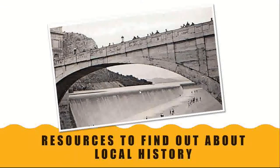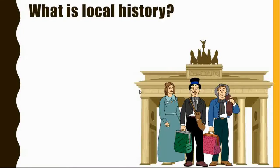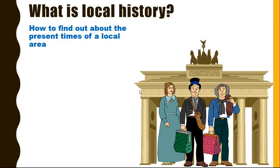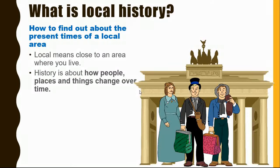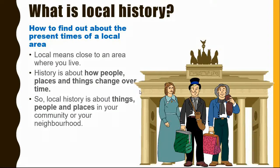Let's have a look at resources to find out about local history. What is local history? Local means things close to an area where you live. History is about how people, places and things change over time. So, local history is about things, people and places in your community or your neighbourhood.